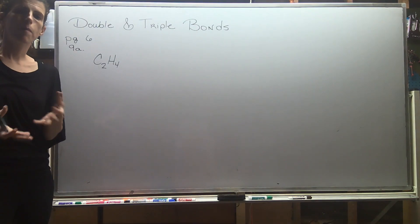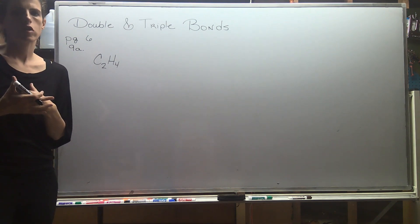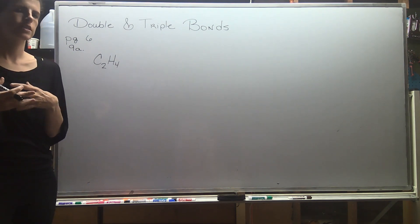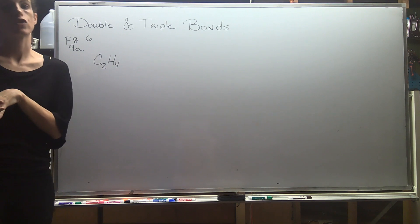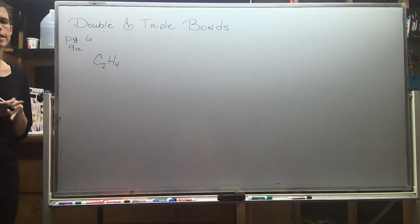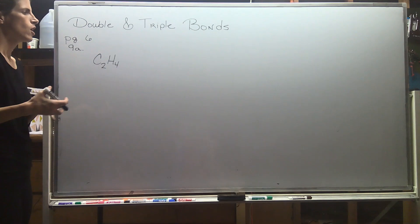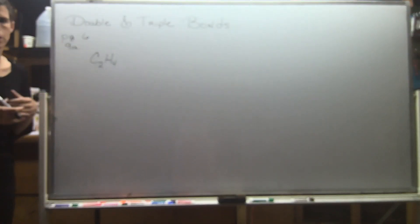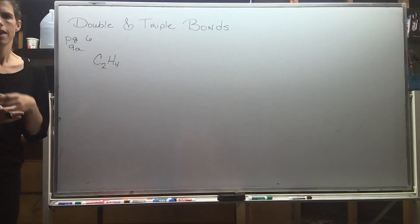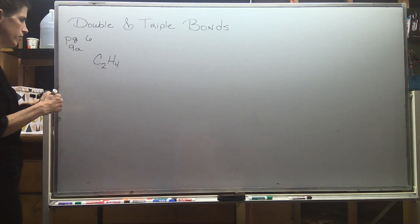Let's start learning about how to draw Lewis dot structures for compounds that contain double and triple bonds. The process is going to be exactly the same as before. We're not going to know ahead of time that we're dealing with a double or triple bond — that's something we're going to figure out by trial and error.